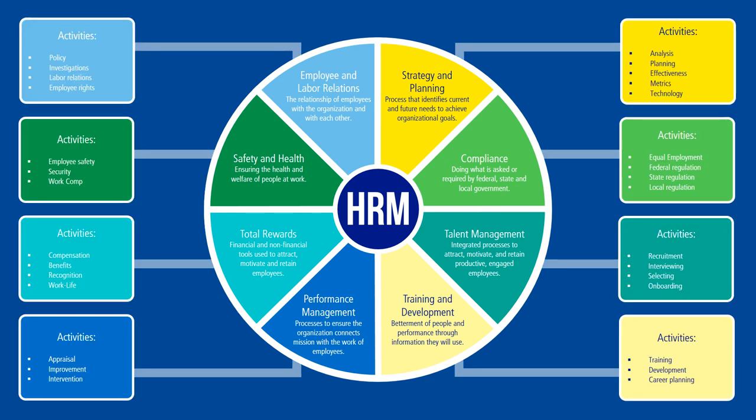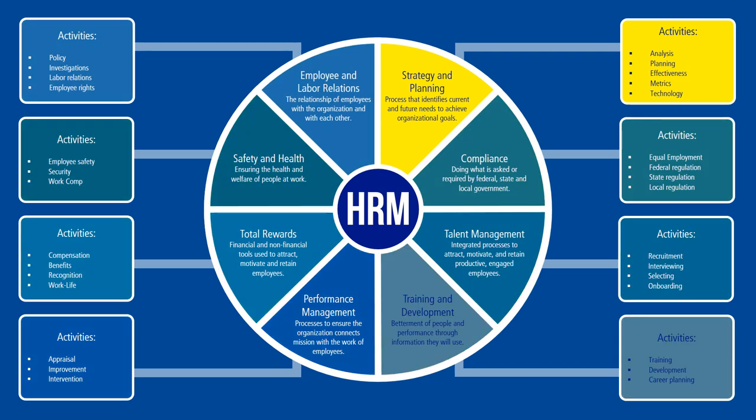For each functional area, Human Resource professionals are responsible for key activities, as you see here. Let's now take a look at each of the individual eight functional areas of Human Resource Management. First, strategy and planning — these are the processes that identify current and future needs to achieve organizational goals. It's really all about everything that we do in Human Resource Management to align organizational mission with the work of our people.